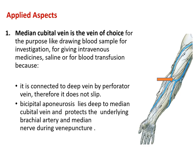Regarding applied aspects, two points are important. First, the median cubital vein is the vein of choice for venipuncture, used for drawing blood samples, giving intravenous medicines, saline, or blood transfusion. It is preferred because it is connected to the deep vein by a perforator vein and therefore does not slip during venipuncture. It also lies over the bicipital aponeurosis, and deep to that are the median nerve and brachial artery, so the bicipital aponeurosis protects these structures during venipuncture.